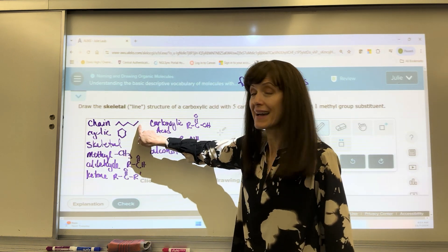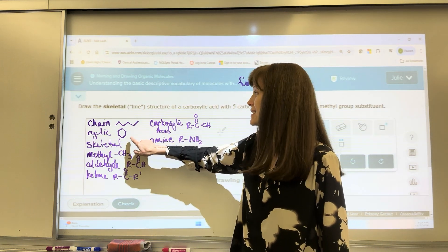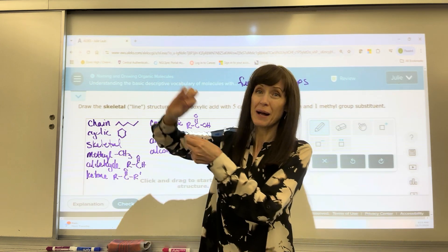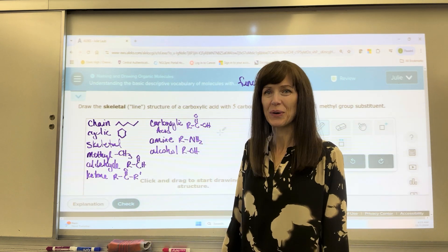This would be a hexane. There's six carbons. This would be a cyclohexane. Six carbons wrapped around in that cyclical compound.